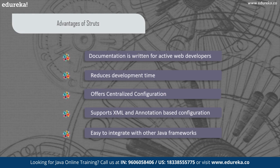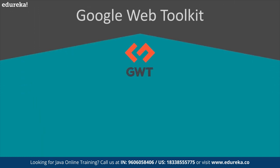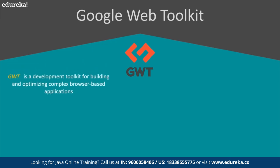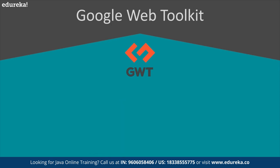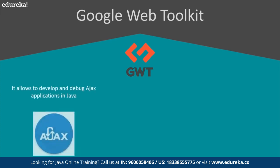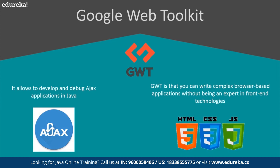The major companies that use Struts framework for application development are Infosys, Accenture, Nextgen, and many more. I hope you guys understood what Struts is. Now let's move ahead to our next framework — Google Web Toolkit, or GWT. GWT is a completely free, open-source framework that helps developers write client-side Java code and compile it as JavaScript. A lot of Google products are written using GWT, such as AdSense, Google Wallet, and Blogger.